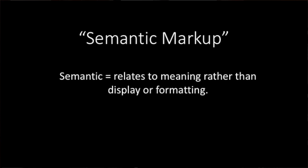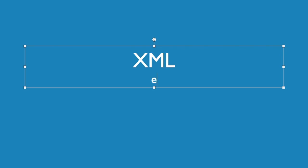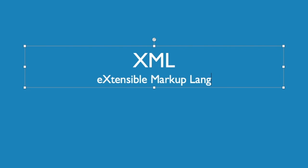Semantic markup describes types, relationships, and properties. So what does XML mean? XML is Extensible Markup Language.